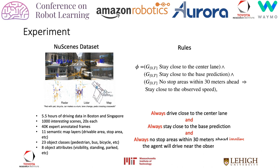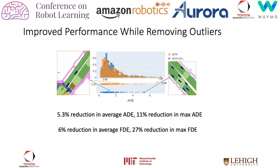We evaluated our approach on the NuScenes dataset and used three rules for testing. The first rule states that an agent should always stay close to the center line. The second rule states that the corrected prediction should stay close to the base prediction. The third rule indicates that if there is no stop area within 30 meters ahead of the agent, then drive close to the current speed. We adopt the multimodal trajectory predictor, or MTP, as our base predictor. The histogram shows that incorporating the rules reduces the average displacement error, especially in the long tail regions. However, we also witnessed the occurrence of overcorrection in the low error regions, where the actual behavior of the agents is not compliant with the rules provided. Overall, we see a 5 to 6% reduction in average error, and 10 to 30% reduction in max error in the given validation set.